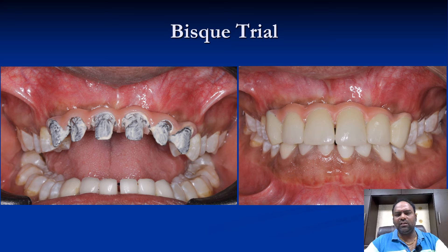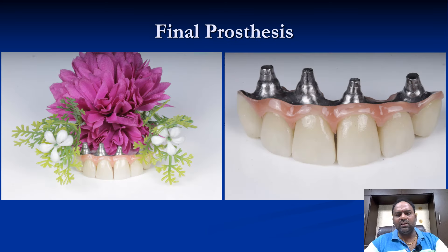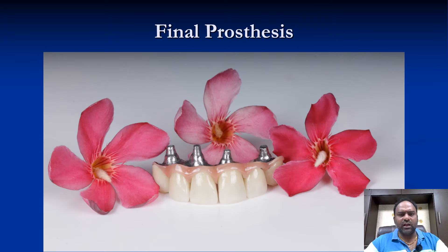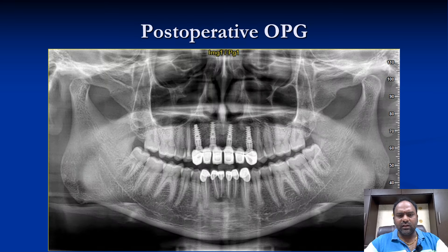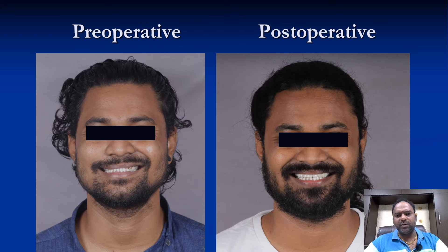This is the final design with the bisque try-in, which the patient liked well. The final prosthesis was made with a titanium bar with individual zirconia crowns. This is how we cemented the zirconia crowns, and this is the post-operative OPG.